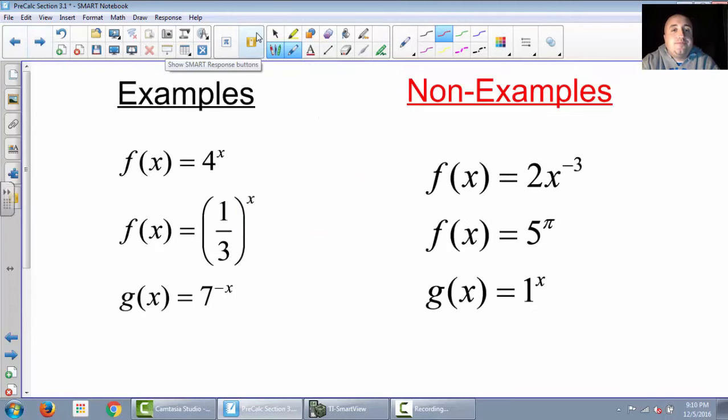Okay, some examples. Notice, it has to be a function where the variable is in the exponent. So this one would be an exponential function: 1 third raised to the x. b is bigger than 0, has a variable as an exponent. This one is 7 raised to the negative x. Still a number bigger than 0, the exponent is still a variable. Even though it's negative, that's okay. This would be 1 over 7 to the positive x. That still is okay.